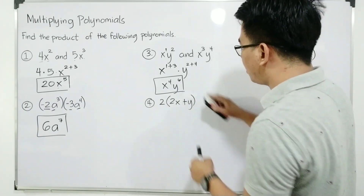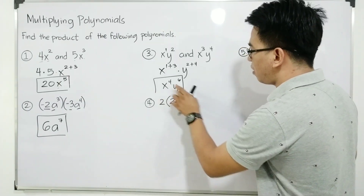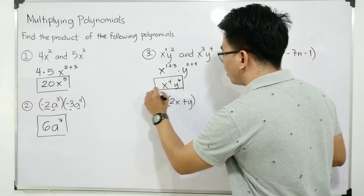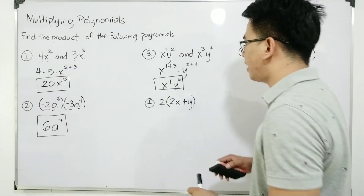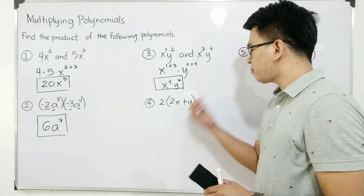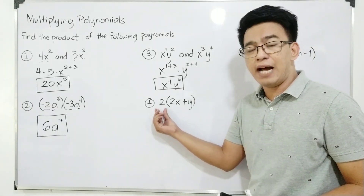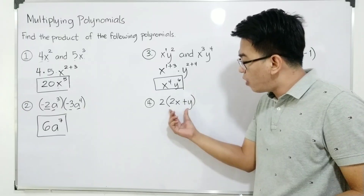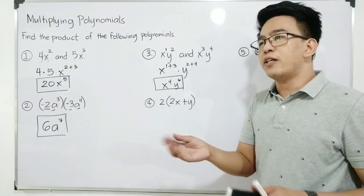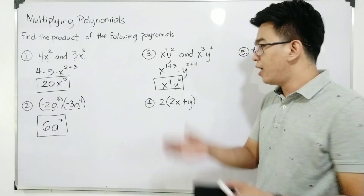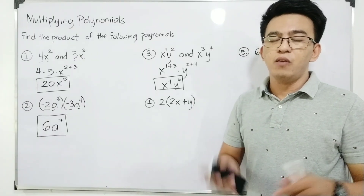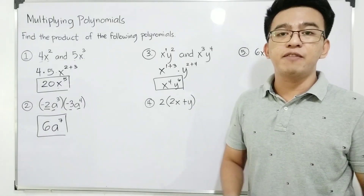So I hope you've now understood how to multiply monomial to another monomial. Now let's move on with item number 4. In item number 4, we are given a monomial outside the parentheses and a binomial inside the parentheses. The question is: how are we going to multiply these two polynomials? We will use the distributive property.